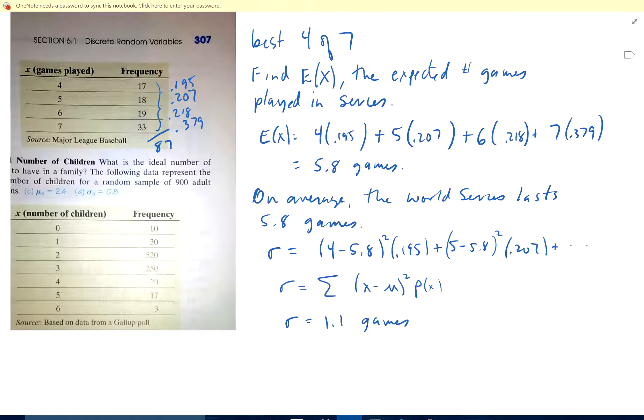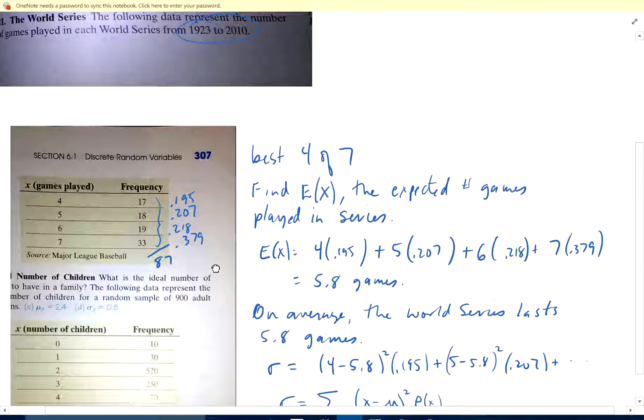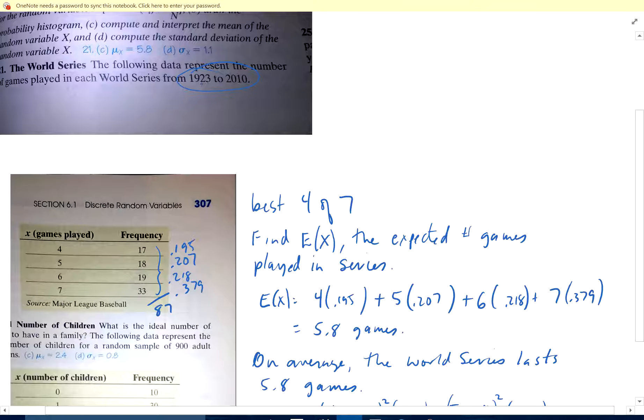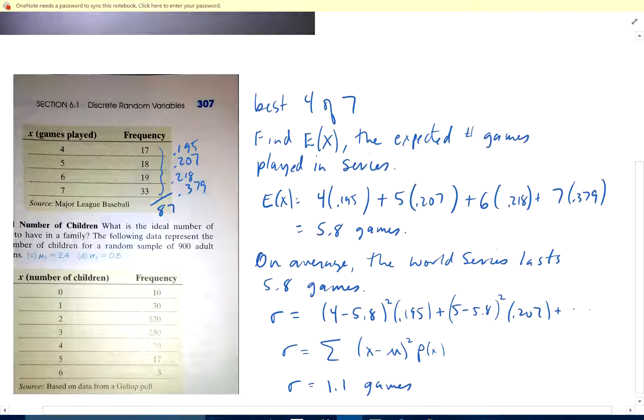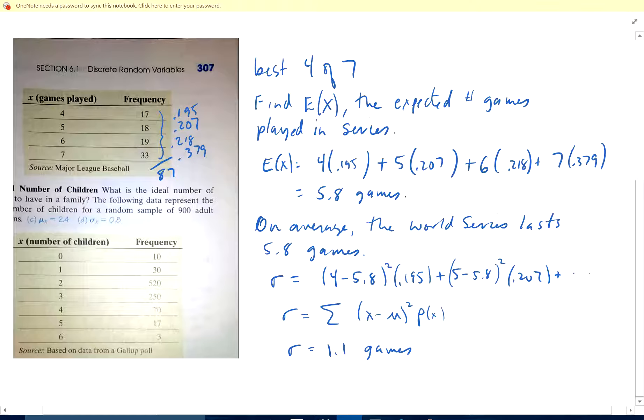Problem 21 is similar. That would be the World Series from 1923 to 2010. There's 87 games or series played, and here's the data right here in the table. I went ahead and converted it to percents out of 87. The World Series plays 4 out of 7 games, so some series are finished in 4, some 5, 6, or 7. Find the expected number of games.